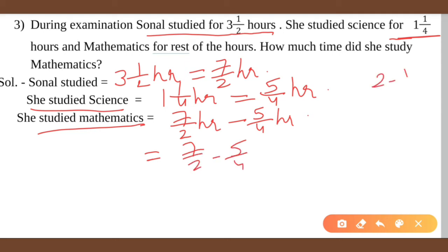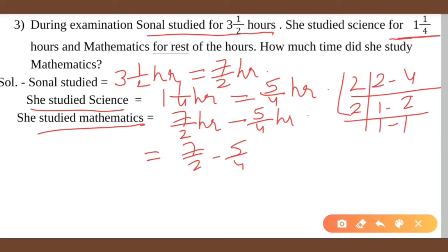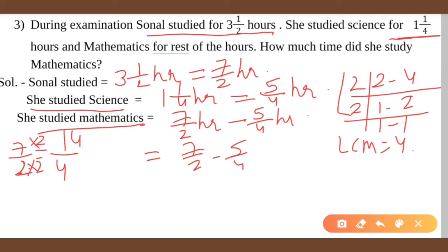LCM of 2 and 4 is 4. We convert 7 by 2 — since 2 times 2 is 4, we get 14 by 4. And 5 by 4 already has denominator 4. So now we write 14 by 4 minus 5 by 4, and 14 minus 5 is 9 by 4.